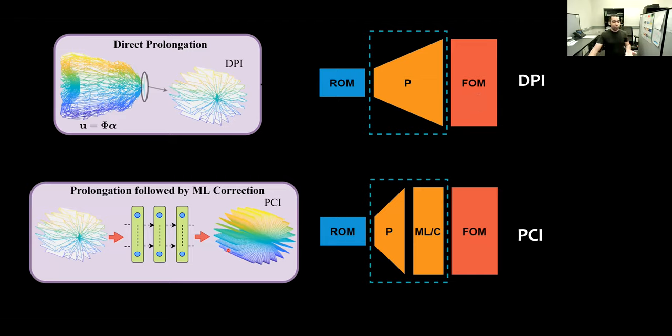The first correction method that we are introducing is prolongation followed by machine learning correction, or PCI. In PCI, we take whatever DPI gives us in the full-order space, and we use some neural network architecture to provide a correction in the full-order space. Since we are doing the correction in the full-order space, this can be okay for 1D problems. But considering 2D or 3D cases, a correction in the full-order space becomes really complicated.